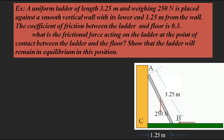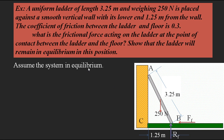When the load acts downward, the ladder tends to move downward, and the bottom end tries to move away from the wall. So the frictional force Ff acts toward the wall, opposite to the motion. Normal reaction Rf acts at the contact point of the ladder with the floor. At point A — the smooth vertical wall — there is no friction, so no frictional force is represented there.